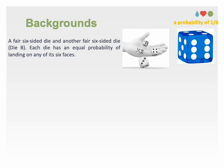A fair six-sided die, also known as standard die, is a cube-shaped object used in games and probability experiments. It's typically marked with dots or numbers from 1 to 6 with each face having a distinct value.